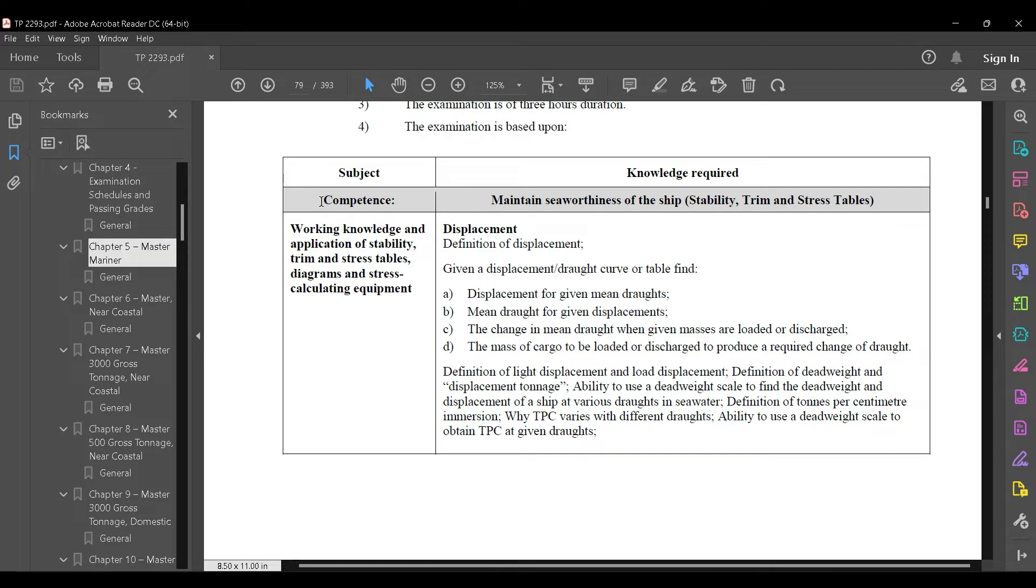On the left-hand side is the subject with a competency requirement. It says working knowledge and application of stability, trim and stress tables, diagrams, and stress calculation equipment. First of all, we're talking about displacement.